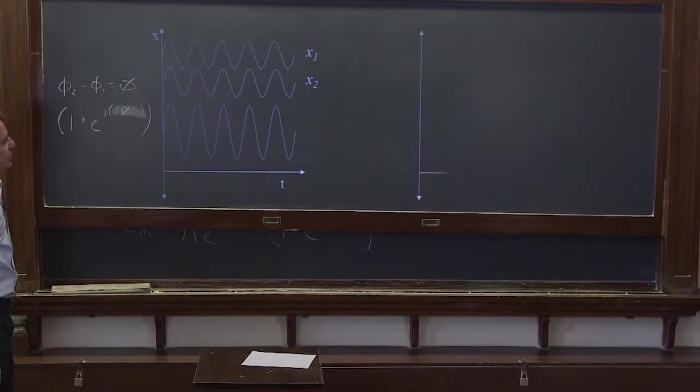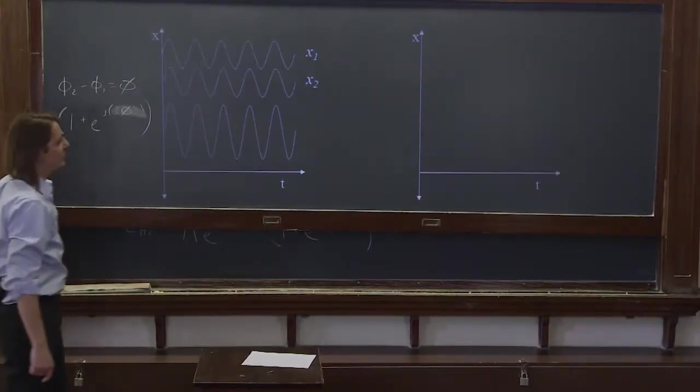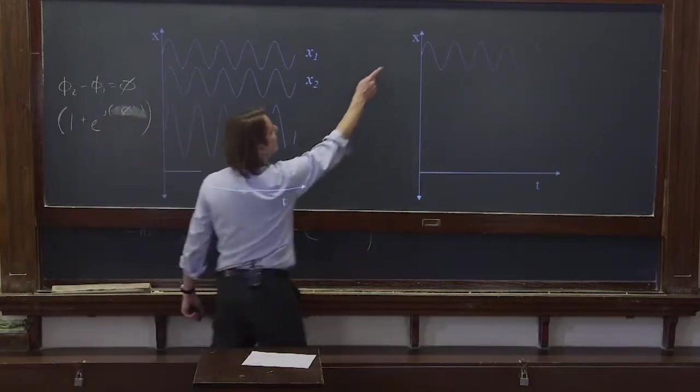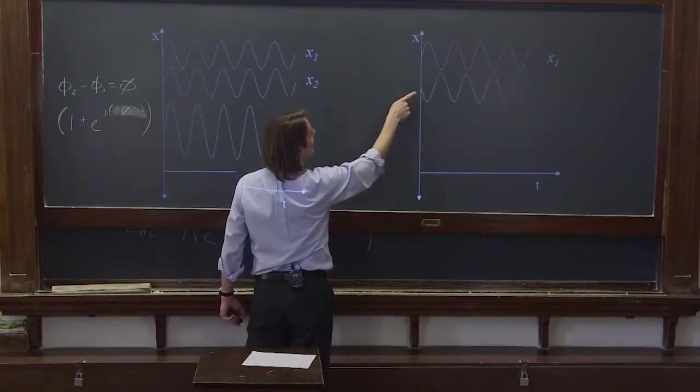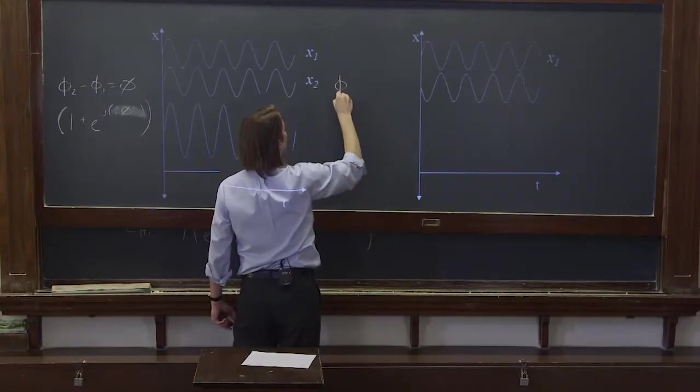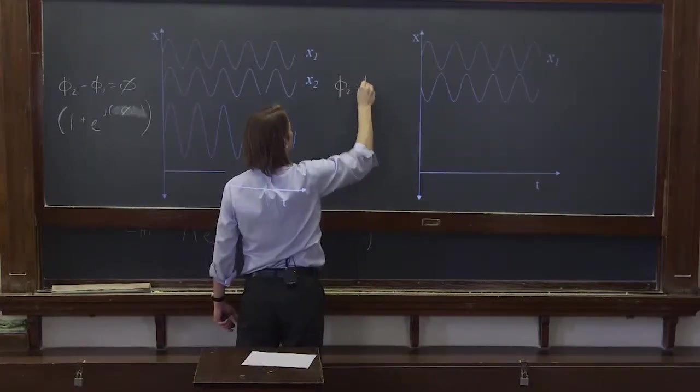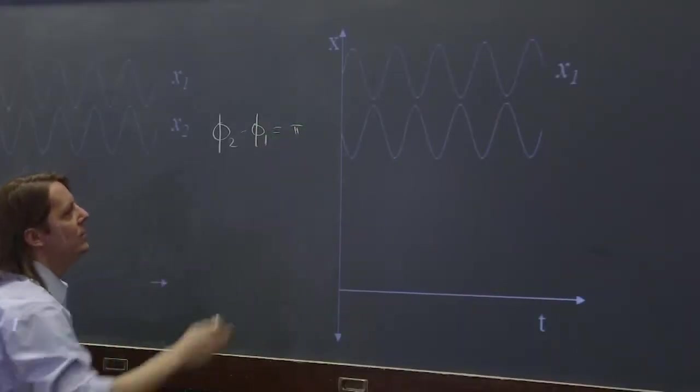We can do another case. We can do two sinusoids out of phase. So here's the x-axis. Here's time. Here's x1 here. And here is x2. And now you can see we've set it up where φ2 minus φ1 is equal to π.